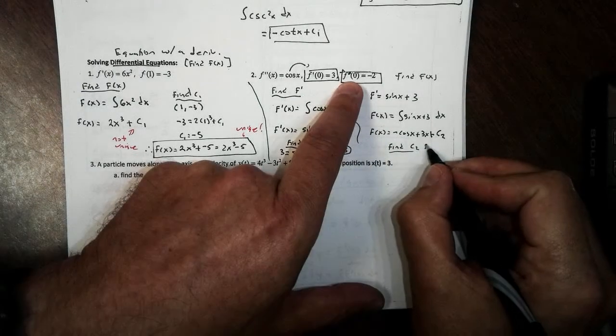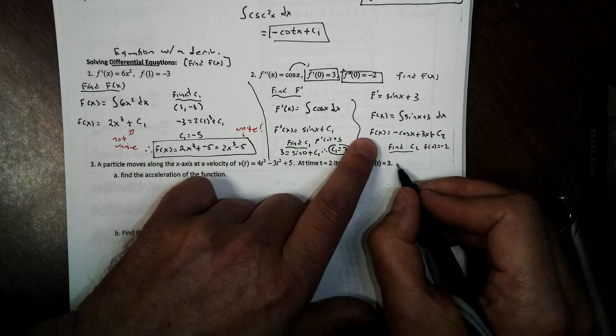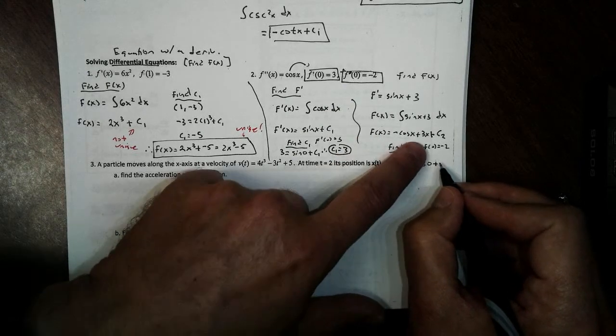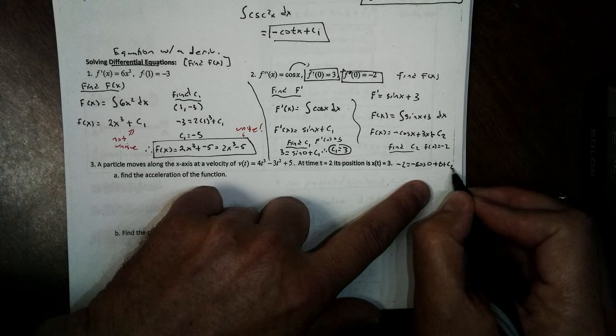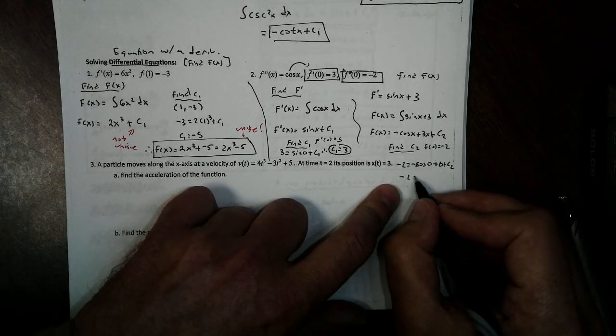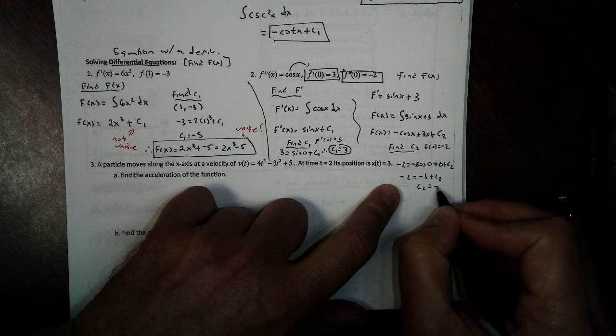They tell us the value at 0 is negative 2. If I plug it in, we get negative 2 equals negative the cosine of 0 plus 3 times 0 plus c2. The cosine of 0 is 1. So we get negative 2 equals negative 1 plus c2. So c2 equals negative 1.